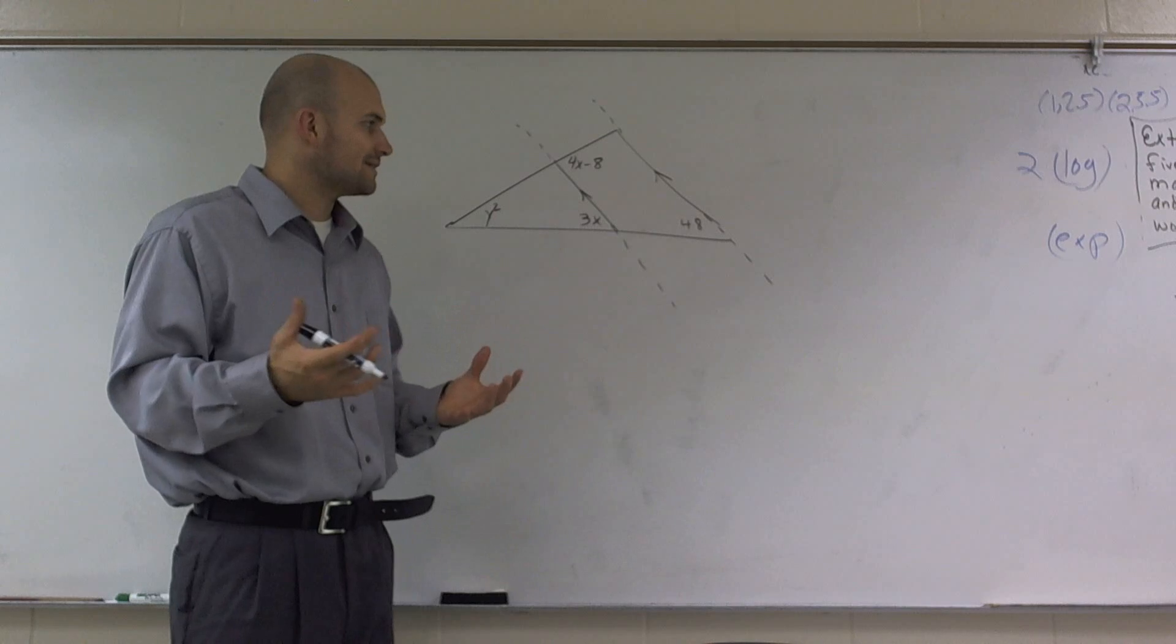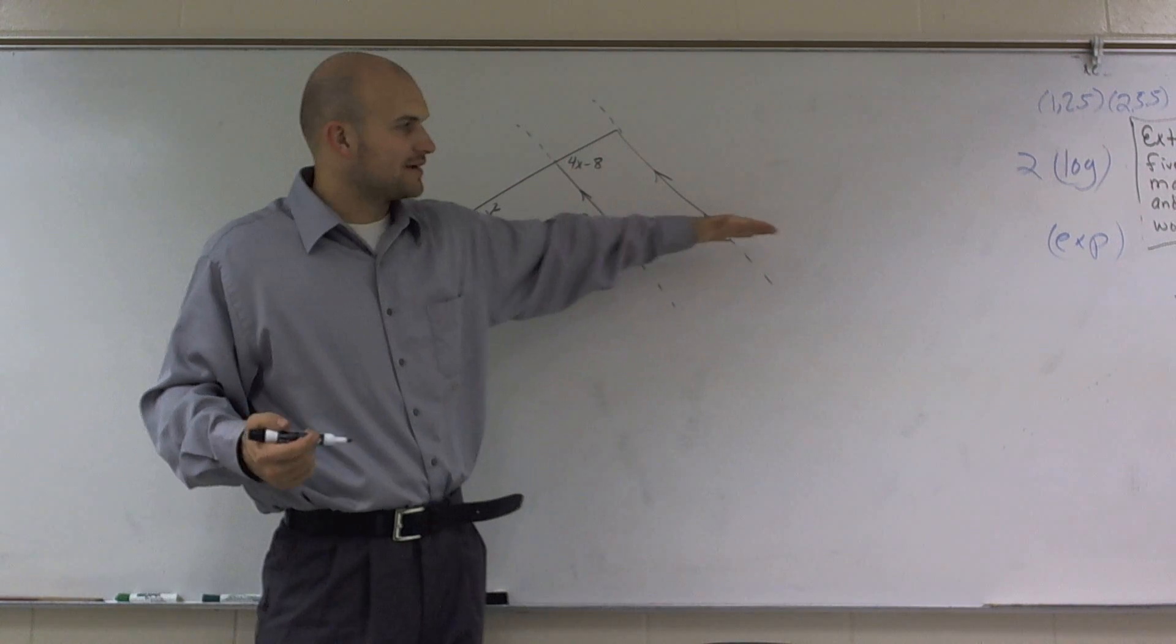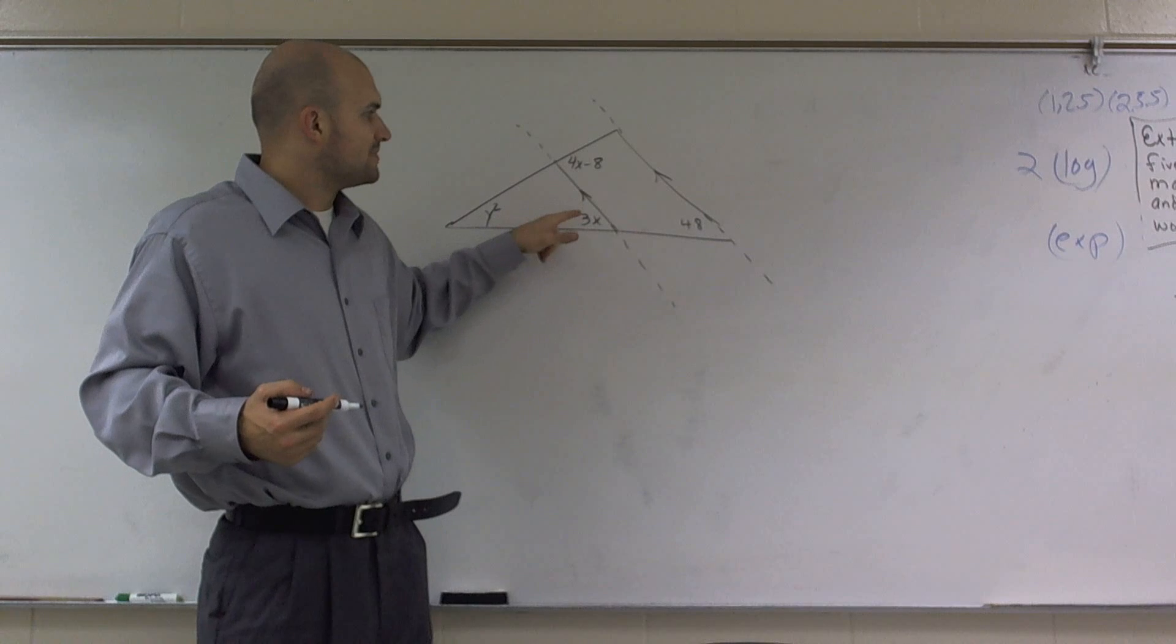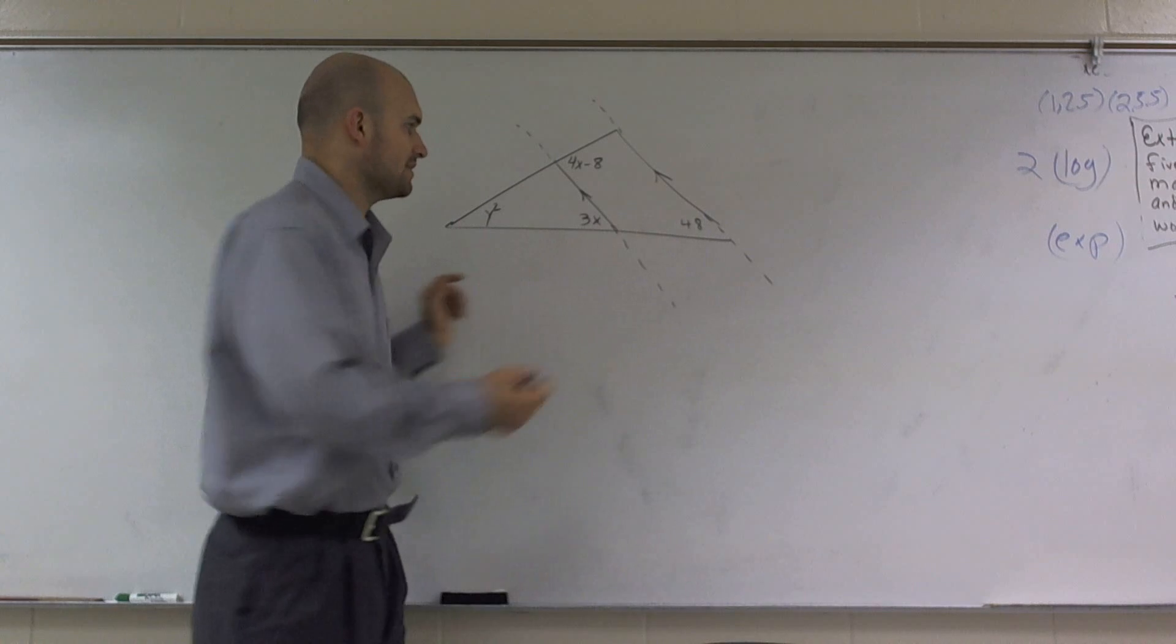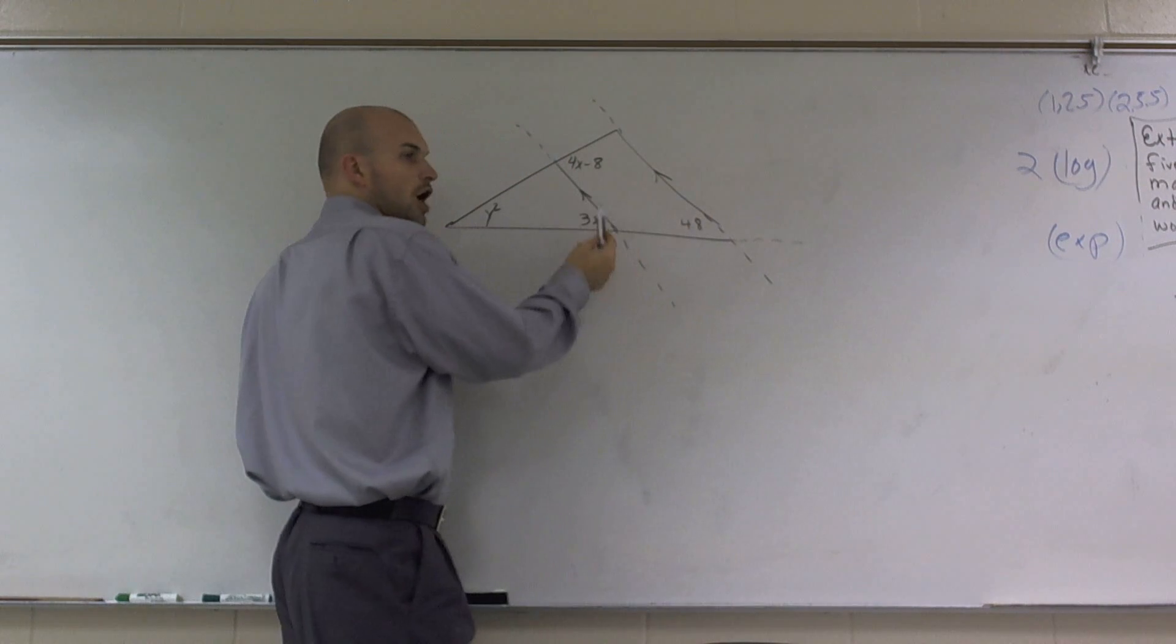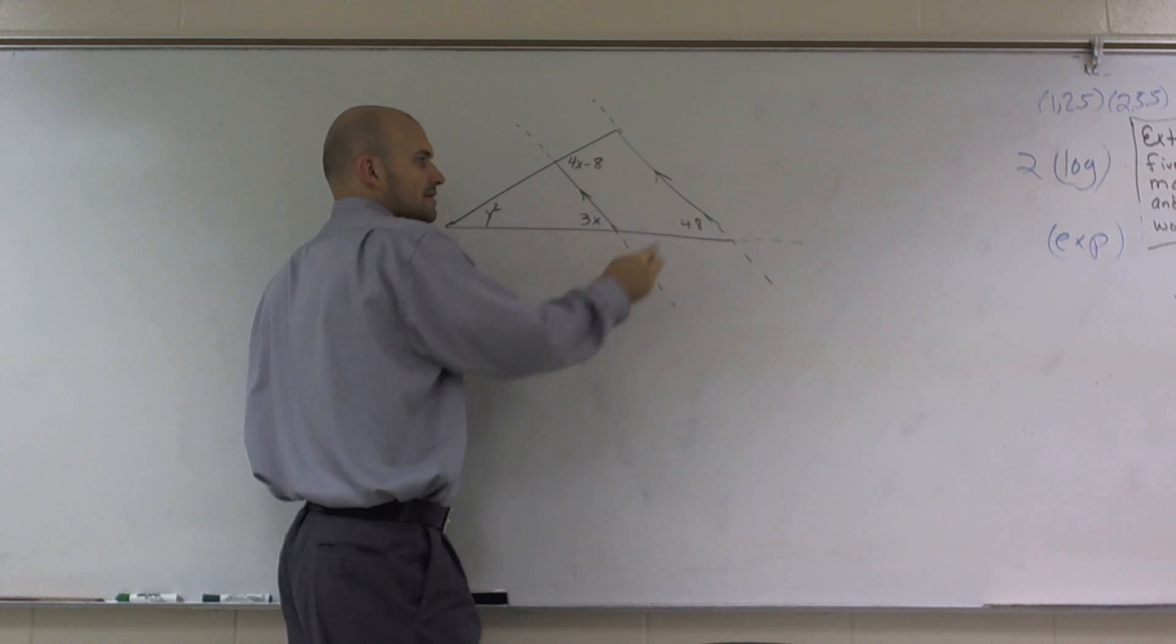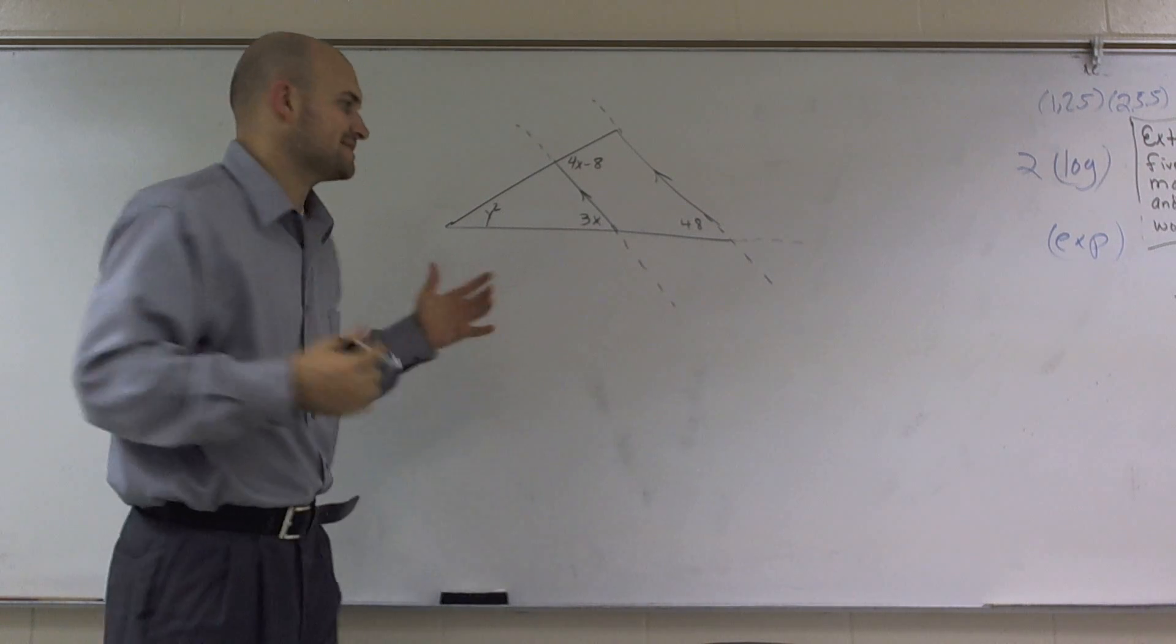And one of those is corresponding angles. So what I notice is, since these are parallel lines and I have a transversal line right here, these two angles are corresponding, meaning they're both in the exact same angle. If you kind of look at these intersections here, they're both in the upper left-hand corner. So therefore, the corresponding angles are going to be at exactly the same value.